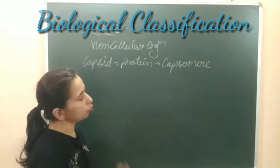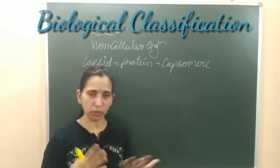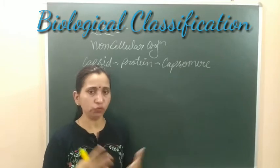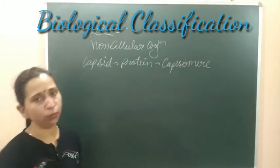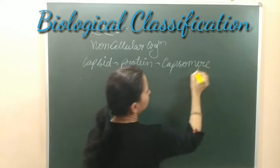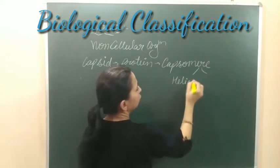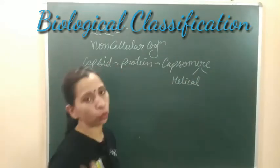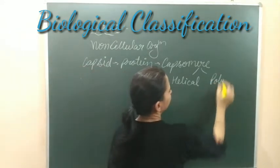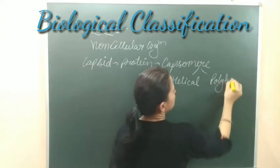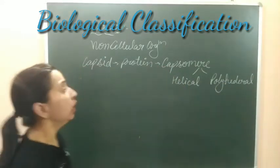The arrangement of capsomeres can be of two types. On that basis, capsids can also be of two types: the first type is helical, and the second type is polyhedral. So these are the two forms of capsids.